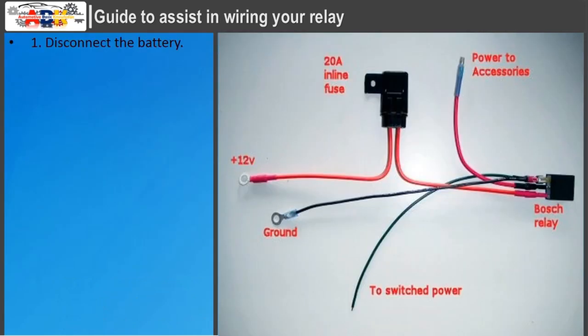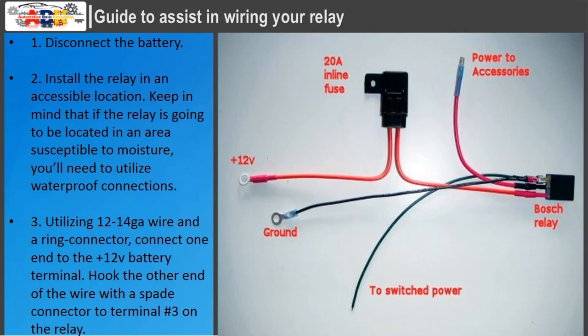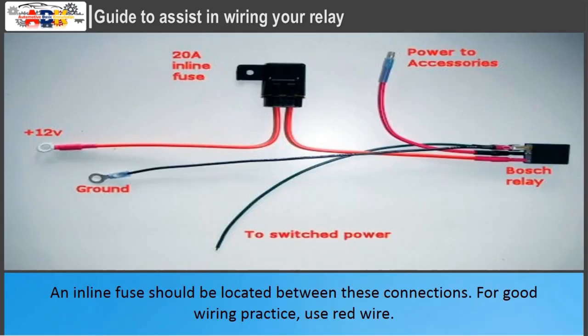Step 1: Disconnect the battery. Step 2: Install the relay in an accessible location. Keep in mind that if the relay is going to be located in an area susceptible to moisture, you'll need to utilize waterproof connections. Step 3: Utilizing 12–14 GA wire and a ring connector, connect one end to the plus 12-volt battery terminal. Hook the other end with a spade connector to terminal number 3 on the relay. An inline fuse should be located between these connections. For good wiring practice, use red wire.